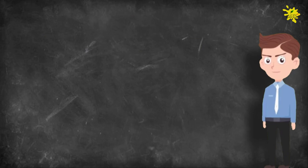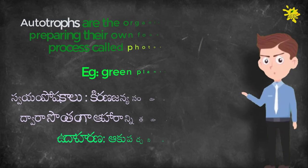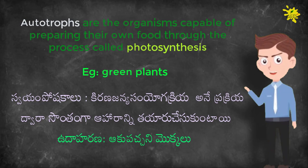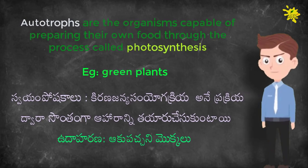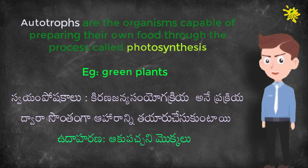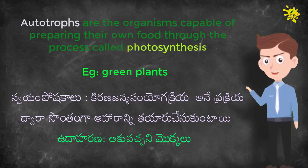Now let us see what is autotrophic nutrition. Autotrophs are the organisms capable of preparing their own food through the process called photosynthesis, e.g. green plants.